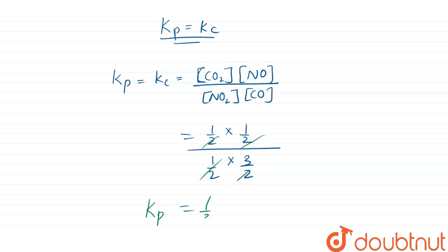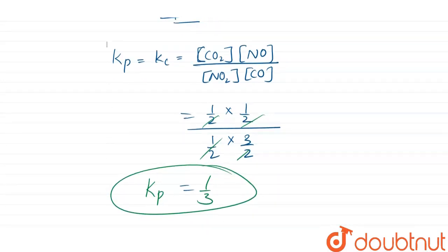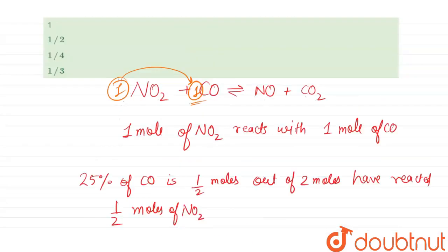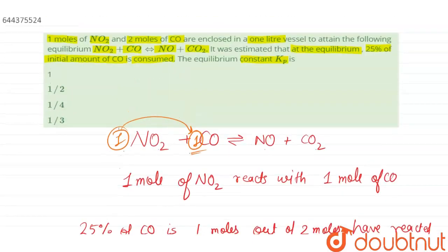Let us see the options given in the question. Option one is 1, that is incorrect. Two is 1/2, also incorrect. Three is 1/4, also incorrect. The fourth option is the correct answer - the equilibrium constant Kp is 1/3. Thank you.